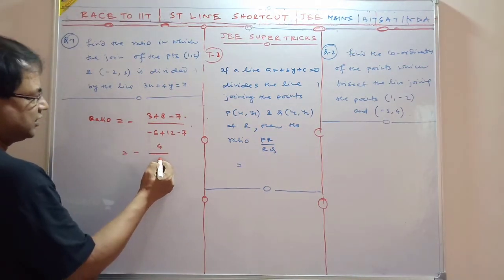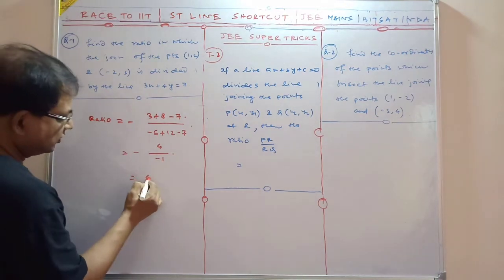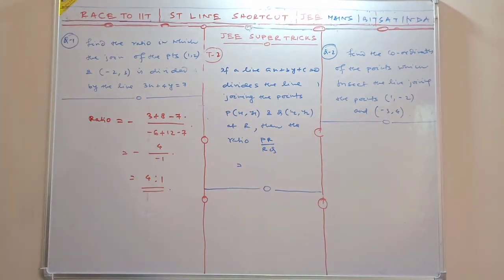12 minus 13, so that is -1. So that is 4 is to 1 ratio.